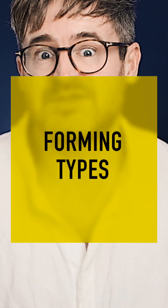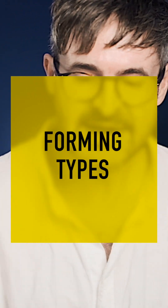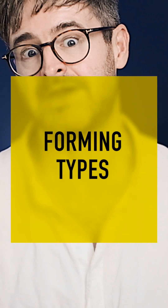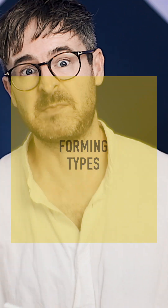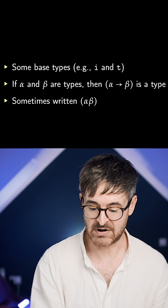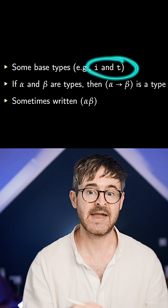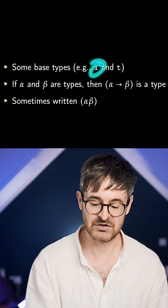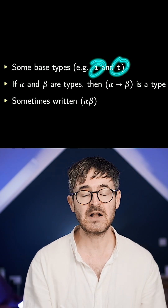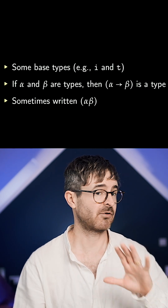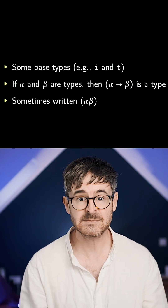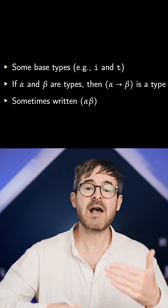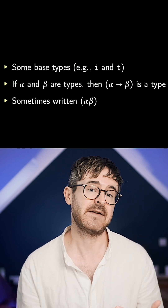So to do a system of types, I need some base types. That might just be nat, or it might be i and t for individuals and truth values — whatever. We've got some base types, and then we have a recursive definition.